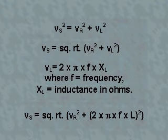Now we know that V sub L is equal to 2 times pi times F times X sub L, where F is the frequency and X sub L is the inductance in ohms. Thus, V sub S is equal to the square root of V sub R squared plus the quantity 2 times pi times F times L squared.